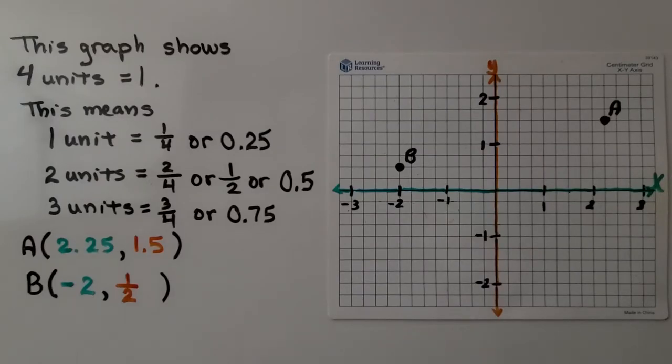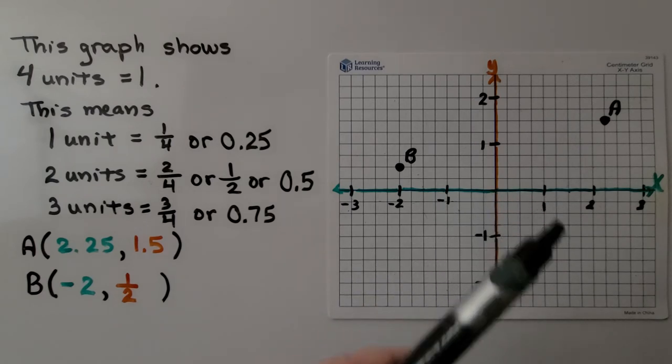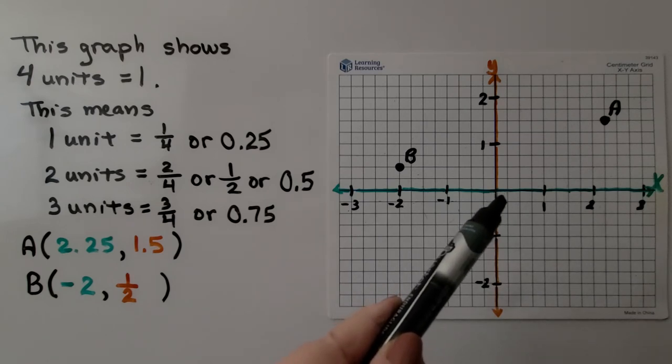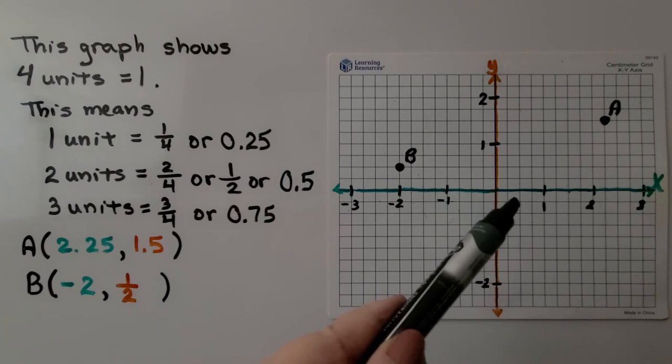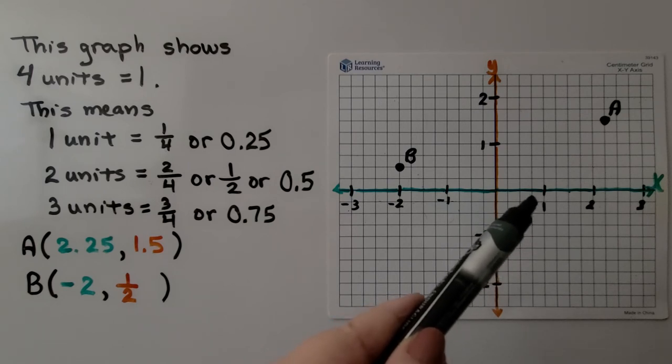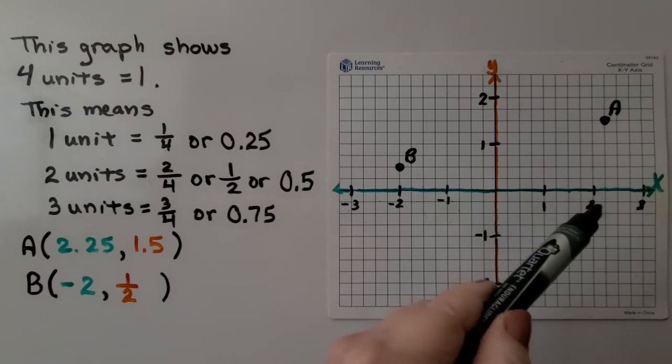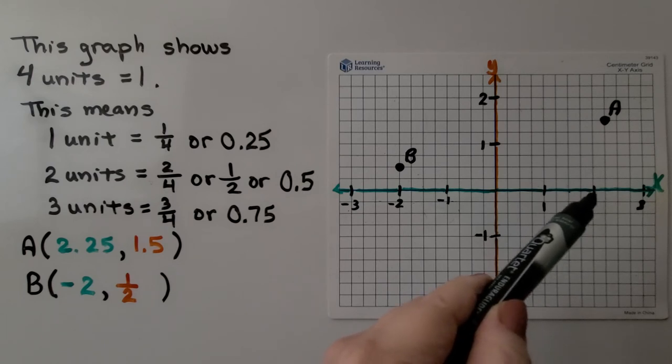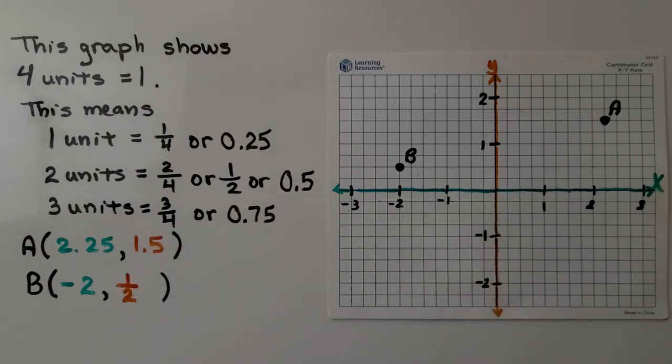Now, take a look at this coordinate plane. This graph shows 4 units is equal to 1. That means 1 unit is 1 fourth, or 25 hundredths. And 2 units is 2 fourths, or 1 half if it's simplified, or 5 tenths. And 3 units would be 3 fourths, or 75 hundredths. We can see point A. Here's 2. And we have 2 and 25 hundredths on x. And if we go up 1 and a half, or 1 and 5 tenths, that would be the y coordinate.